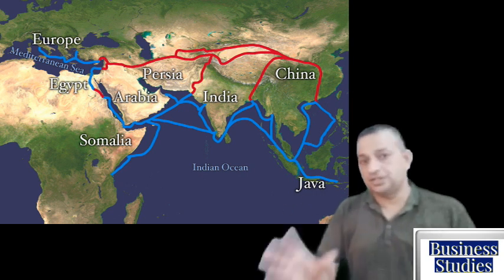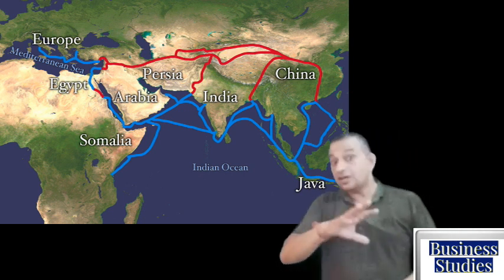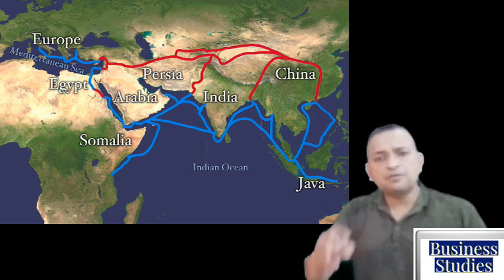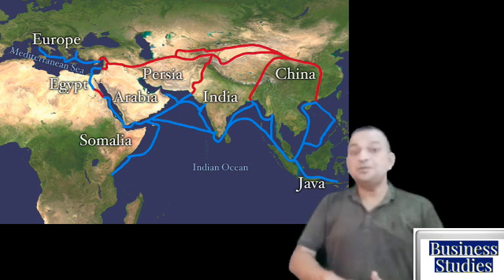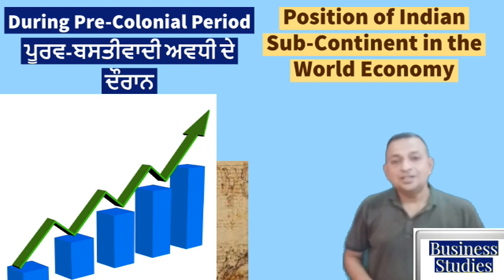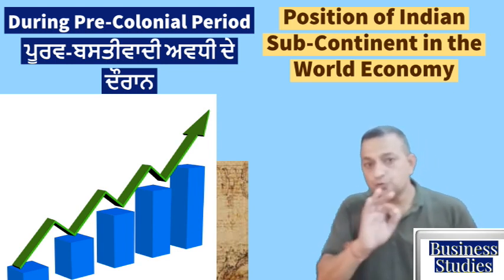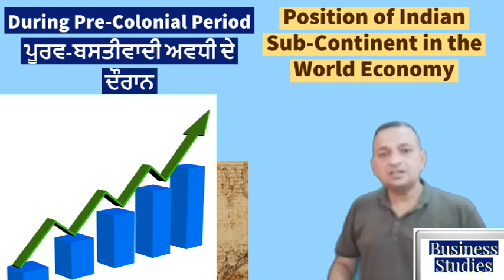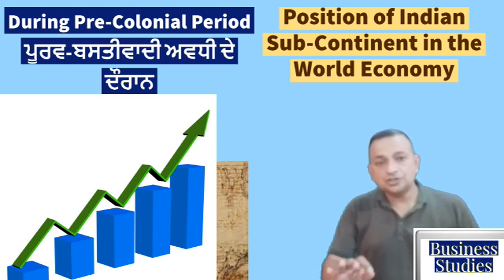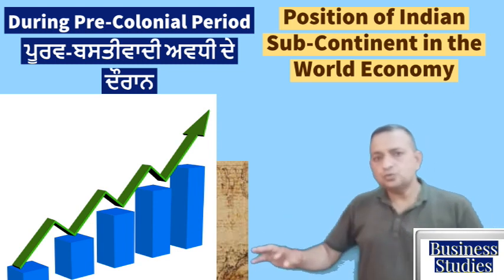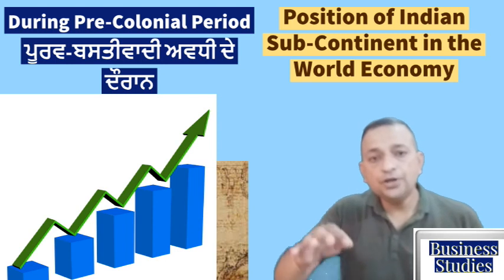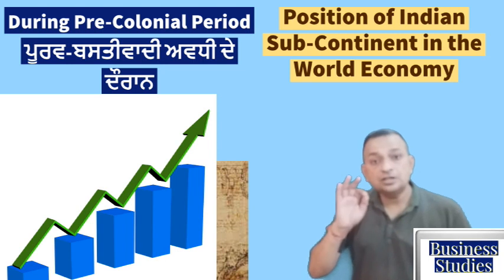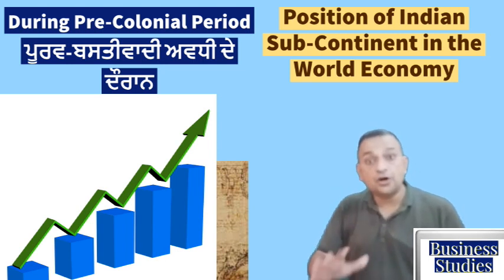Many invaders came to our country and took a great deal away. We are not reading history here — we are studying business studies — so we won't go into every detail. However, during the pre-colonial period, including the era of the East India Company and British rule, India held approximately 25% of the world's industrial share.